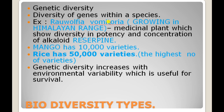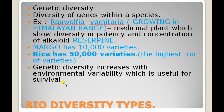The plant is one and the same, but the potency and concentration of reserpine differs across varieties. Similarly, mango — the pride fruit of India — has 10,000 varieties, and rice (paddy) has 50,000 varieties. As environmental variability increases, genetic diversity also increases, which is useful for the survival of the species.